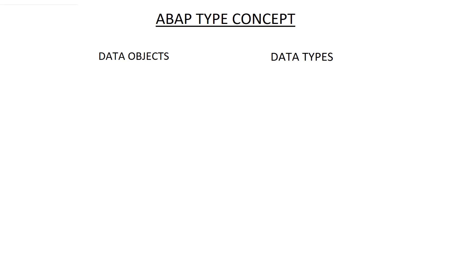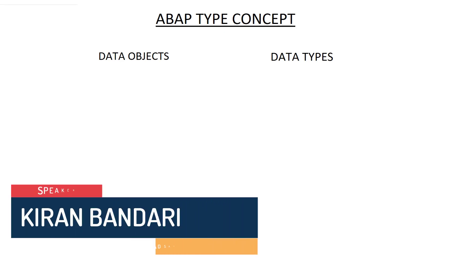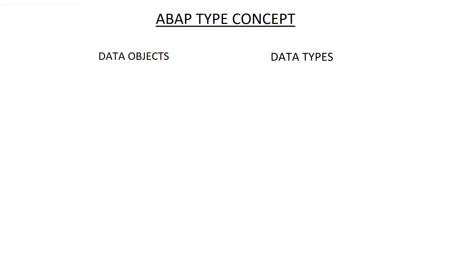In this session we'll understand the ABAP type concept, where I'll introduce you to two terms: data objects and data types. The fundamental task of an ABAP program is to process data. In SAP we develop business applications, and the purpose of these business applications is mostly to process data.